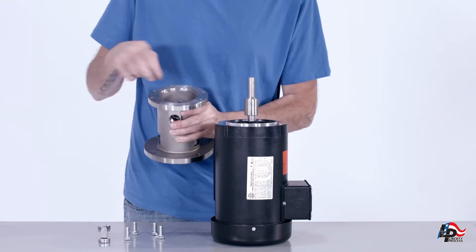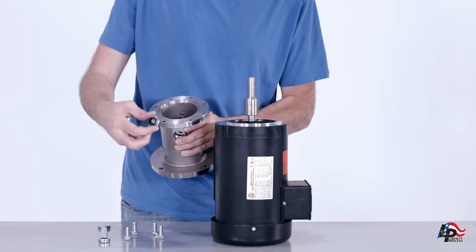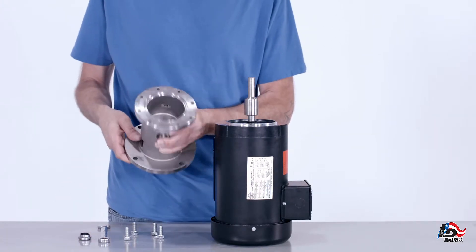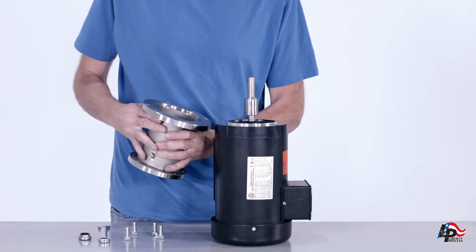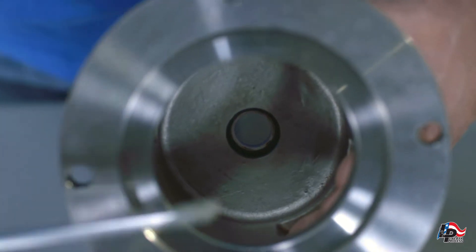Once the pump discharge casing is separated from the motor, you can remove the rotating face of the mechanical seal assembly. Turn the pump discharge casing over. Using your fingers, press out the stationary face of the mechanical seal.